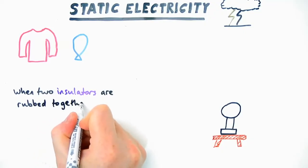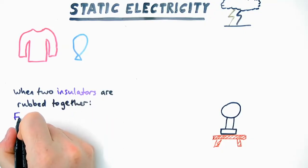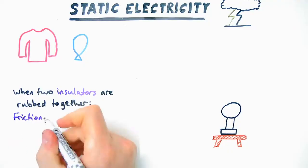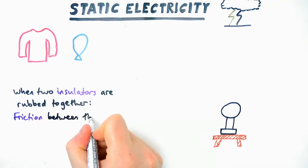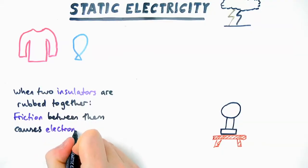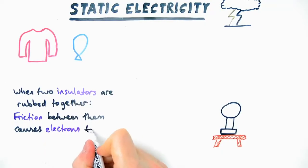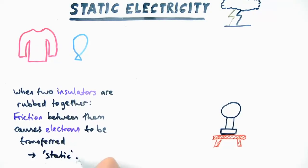So static electricity occurs when two insulators are rubbed together. Now, insulators being plastic or anything that doesn't conduct electricity. When they're rubbed together, the friction between them causes electrons to transfer from one object to another. Notice it's the electrons that are transferred, no positive charges at all.